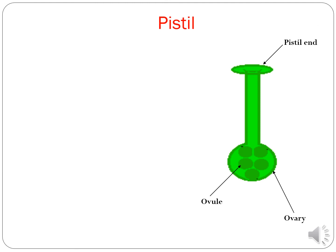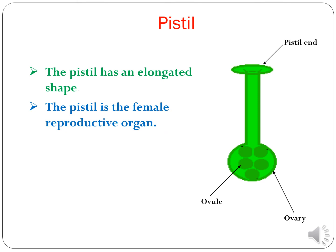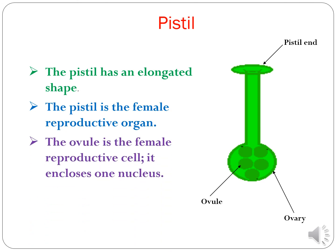This is the pistil, this is the ovary, and this is the ovule. The pistil has an elongated shape and is the female reproductive organ. The ovule is the female reproductive cell — it contains one nucleus. Each ovule is a female reproductive cell containing one nucleus.